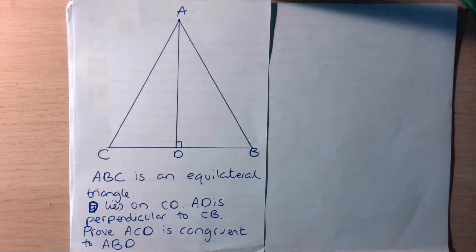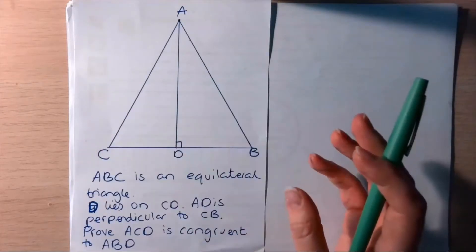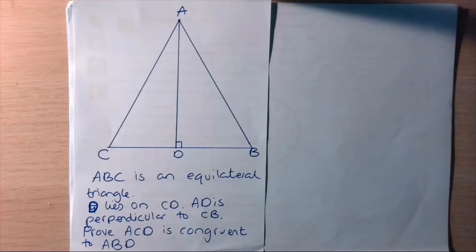Hi there, we're looking at proving congruency today. The first stage with congruency is quite often just seeing two separate triangles and having to prove that they're congruent using one of the four different rules. However, they do get a little more complicated and writing out the proofs can be quite tricky when you've not had to do them before.